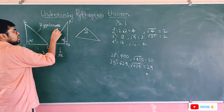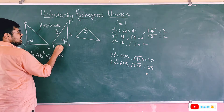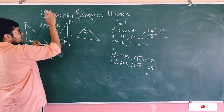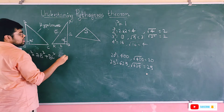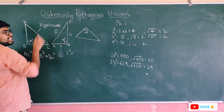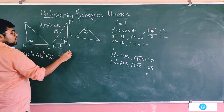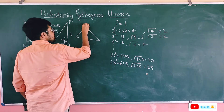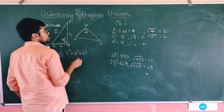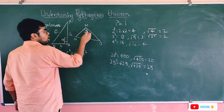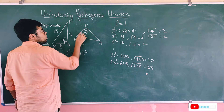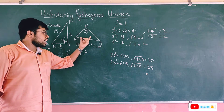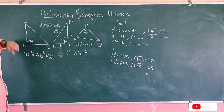For another triangle MNO, how do I apply Pythagoras theorem? The hypotenuse is always opposite to 90 degrees, so NO² = MN² + MO². I hope you now understand how to apply Pythagoras theorem for a right angle triangle: the square of the hypotenuse equals the sum of the squares of the other two sides.